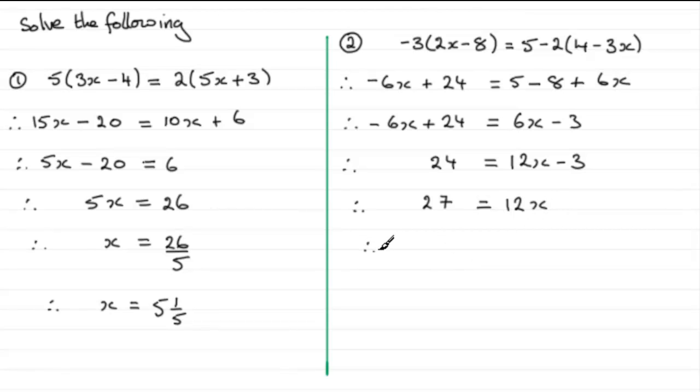I now divide both sides by the 12 and I've got 27 over 12 equals x. I can reverse that round and I've got x equals 27 twelfths. But I'm going to reduce this by saying 12 into 27 goes twice.